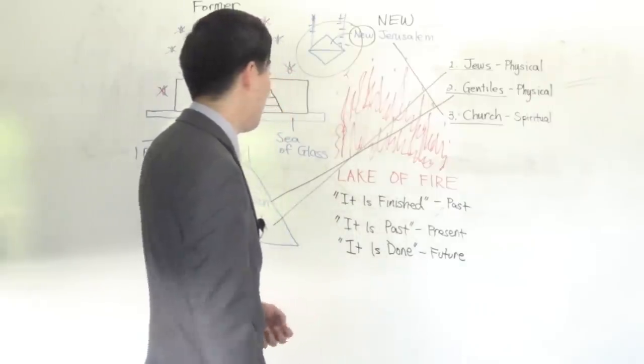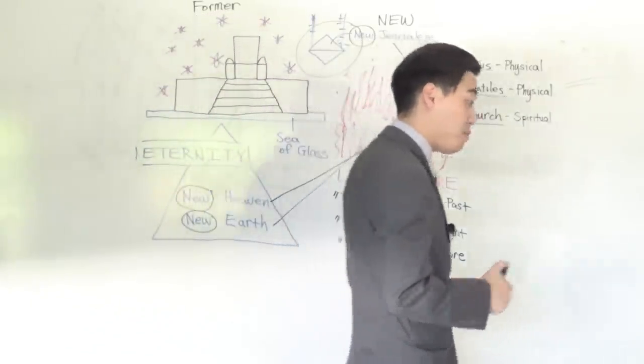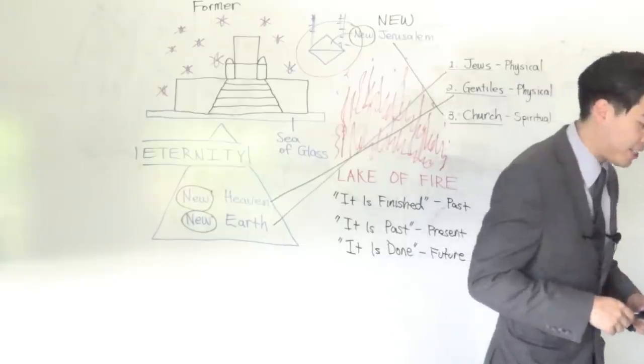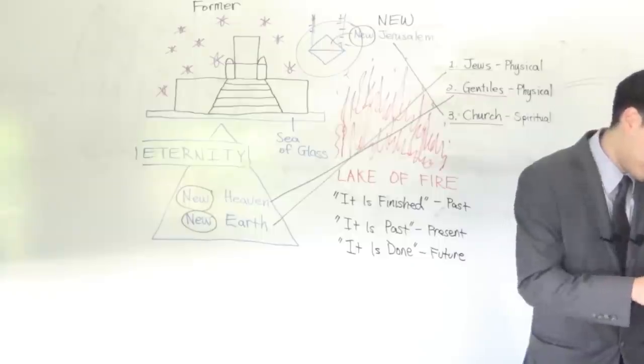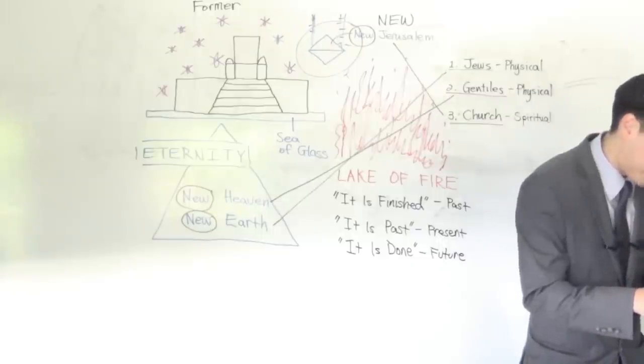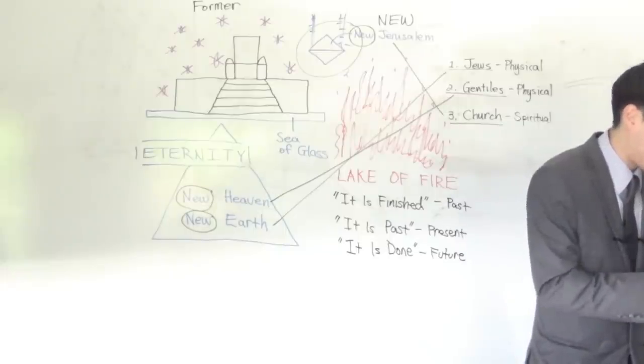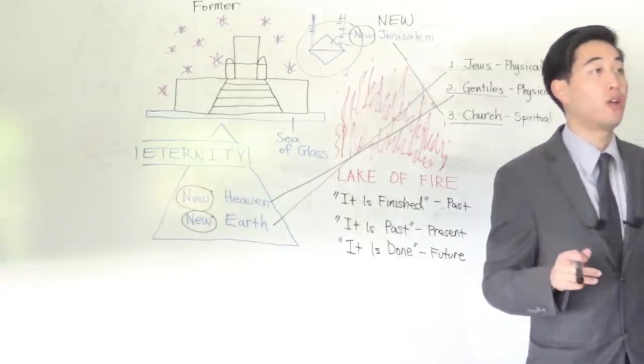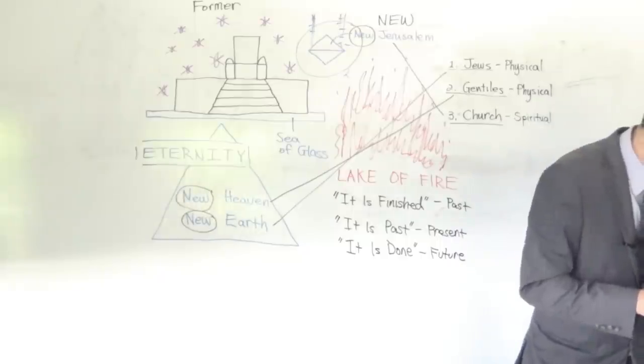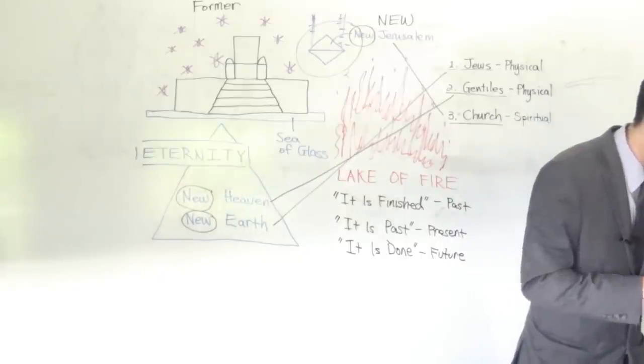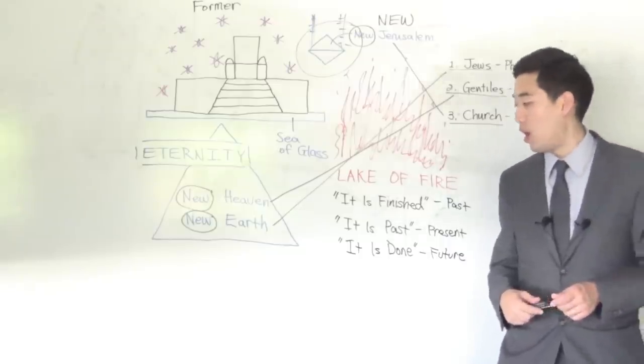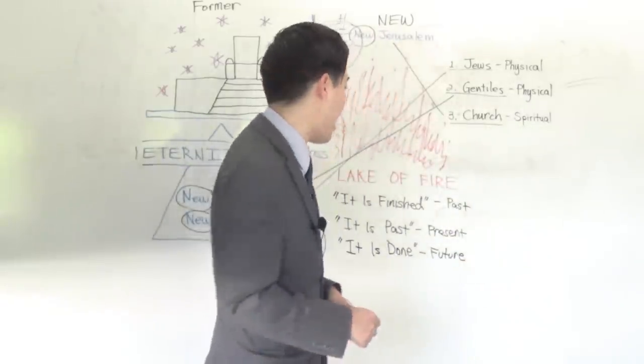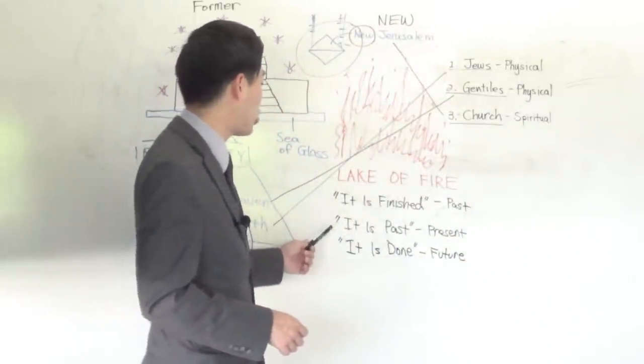Dr. Ruckman mentioned there are two endings in the book of Revelation. The first one you'll notice is at verse 6: 'It is done.' The second time that he mentions the finale and the ending is verse 13 through 21 of chapter 22. So there are two endings here.